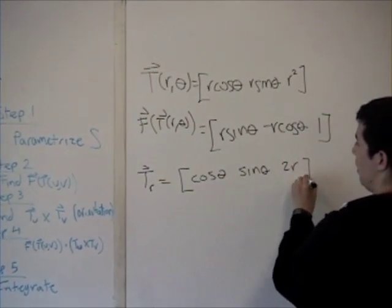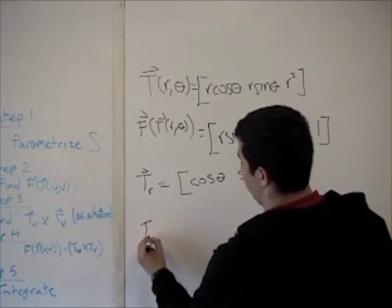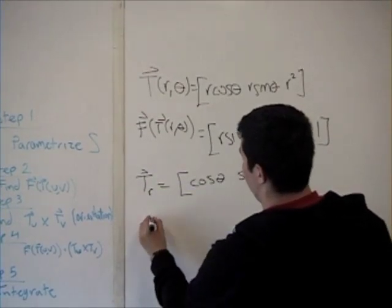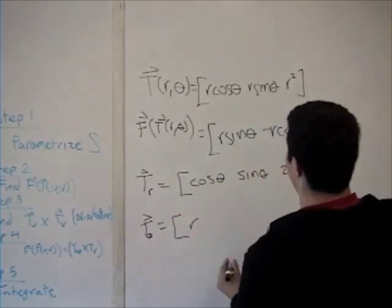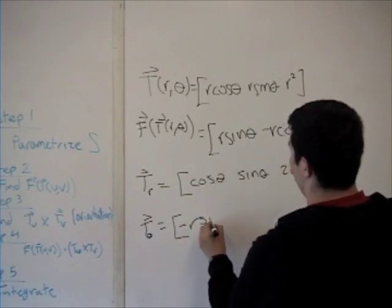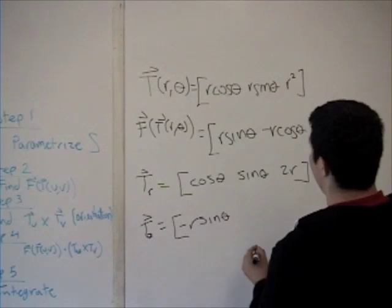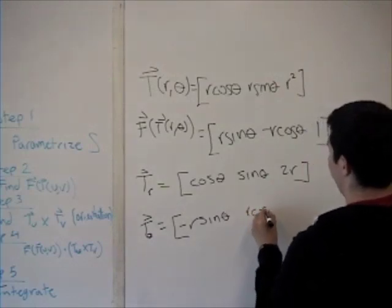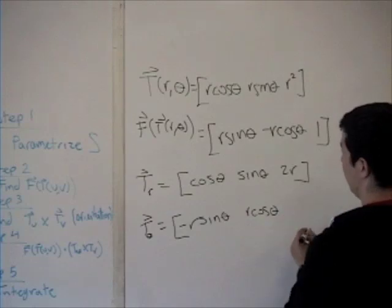And then we find T_θ, and we get that it's <-r sin(θ), r cos(θ), 0>.